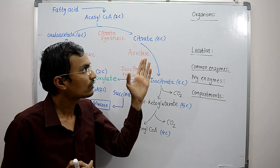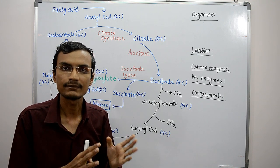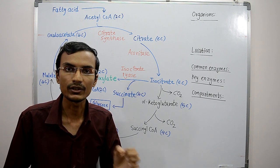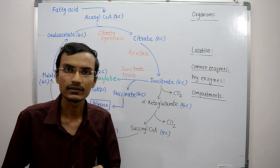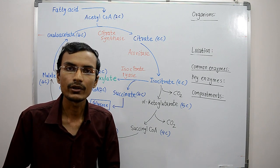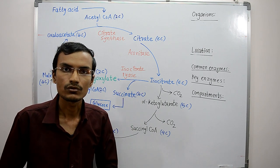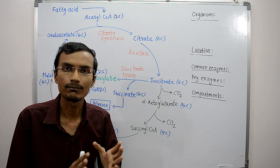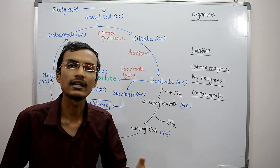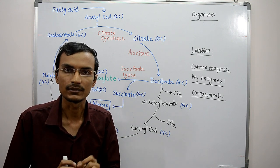The organisms in which this cycle occurs are plants, bacteria, protists, and fungi. This cycle does not occur in animals including human beings, but some animals like nematodes during early embryogenesis have the enzymes of the glyoxylate cycle present, so they may be performing it during that stage. Otherwise, in all animals this cycle is absent.